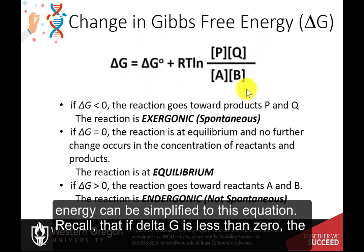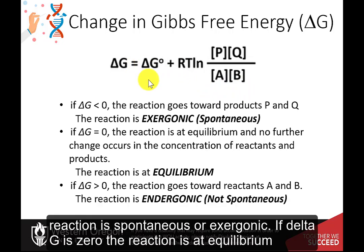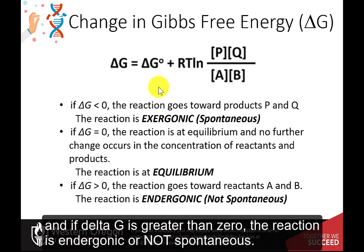Recall that if delta G is less than zero, the reaction is spontaneous or exergonic. If delta G is zero, the reaction is at equilibrium. And if delta G is greater than zero, the reaction is endergonic or not spontaneous.